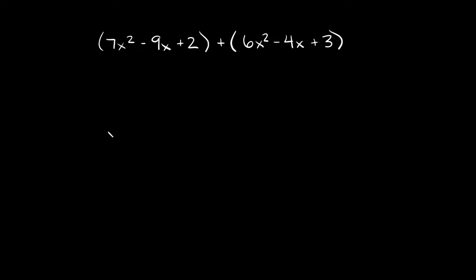What's up you freaking geniuses? In this video I'm going to teach you how to add polynomials and combine like terms. So here we have this problem: 7x squared minus 9x plus 2 in parentheses, and then we're going to add that to 6x squared minus 4x plus 3 in parentheses.